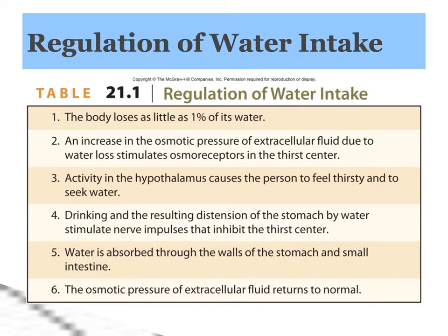How does our body control our water intake? Our body has osmoreceptors that are located near the hypothalamus in the brain. They are keeping track of how concentrated or how dilute the cerebral spinal fluid is. Since fluid is constantly being interchanged between the different compartments, dehydration in one compartment will lead to dehydration in all compartments. When the osmotic pressure increases because there is less water, more solutes, more osmolality, then the thirst center will be activated by these osmoreceptors, causing us to feel thirsty and hopefully to seek out something to drink.